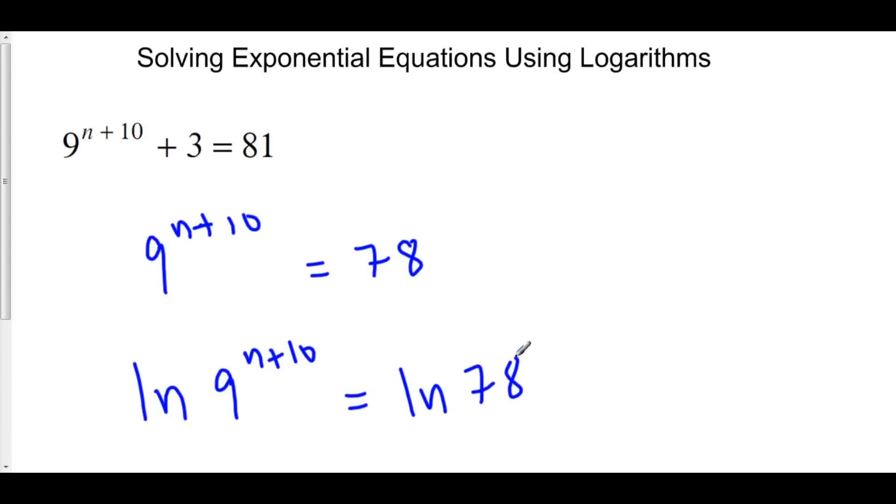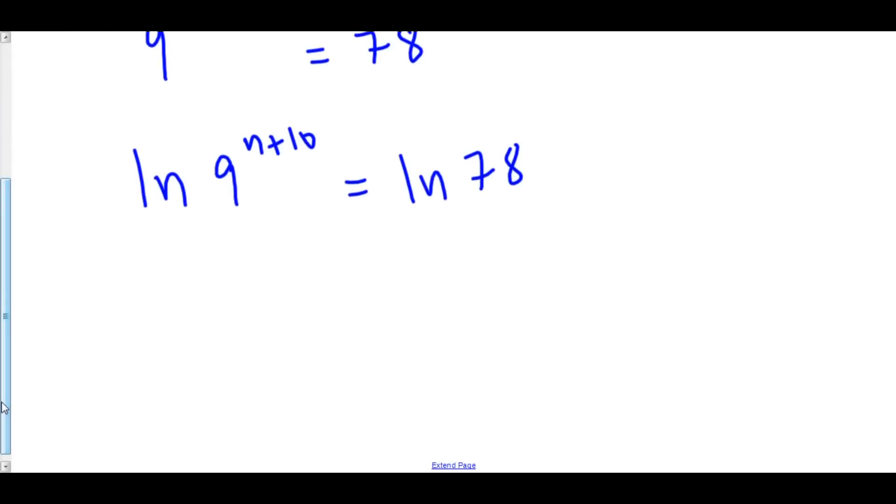Now one of our properties of logs allows us to take our exponent and move it in front. We now have n plus 10 times the natural log of 9 is equal to the natural log of 78.